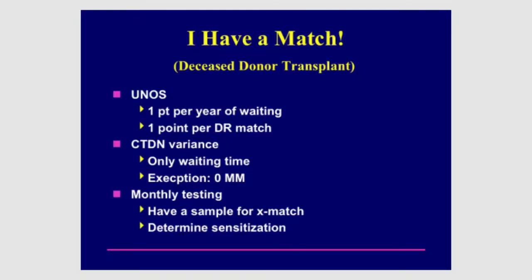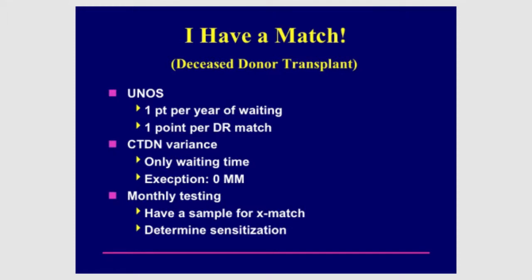There is an exception called a zero mismatch — essentially a perfect match from the deceased donor list — and if it matches you, even if you've only been listed three months, you can still receive it. To receive a zero mismatch from outside the region you need to be at least 20% sensitized. This is why monthly serum testing is important: to have a sample in the lab when an offer comes so we can run the cross-match, and also to regularly monitor sensitization so there are no surprises.